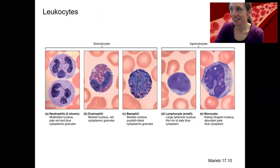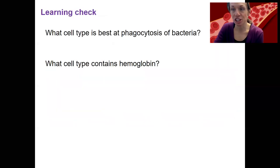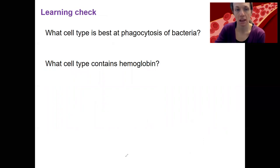Let's do a learning check. What cell type is best at phagocytosis of bacteria? And what cell type contains hemoglobin?